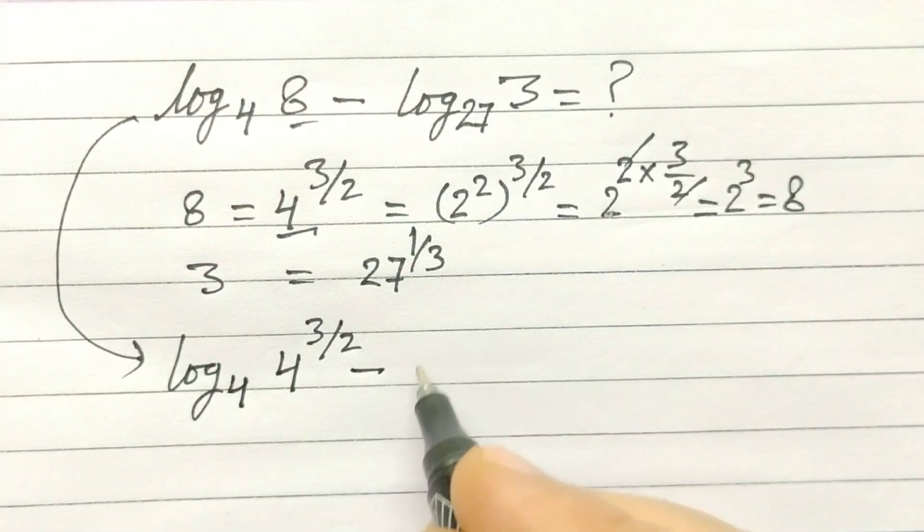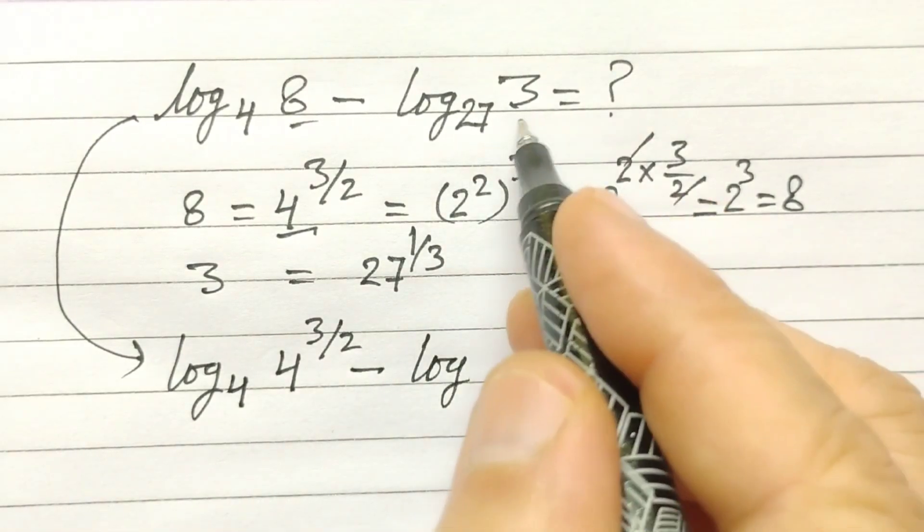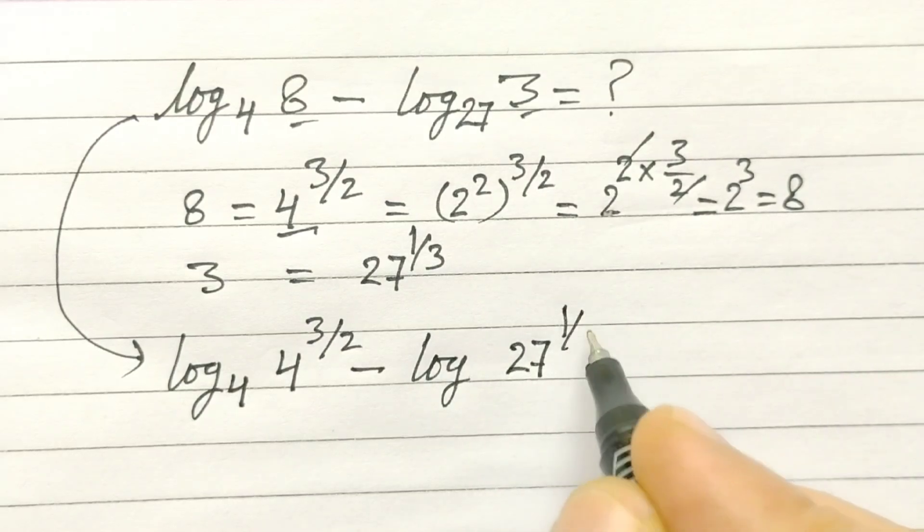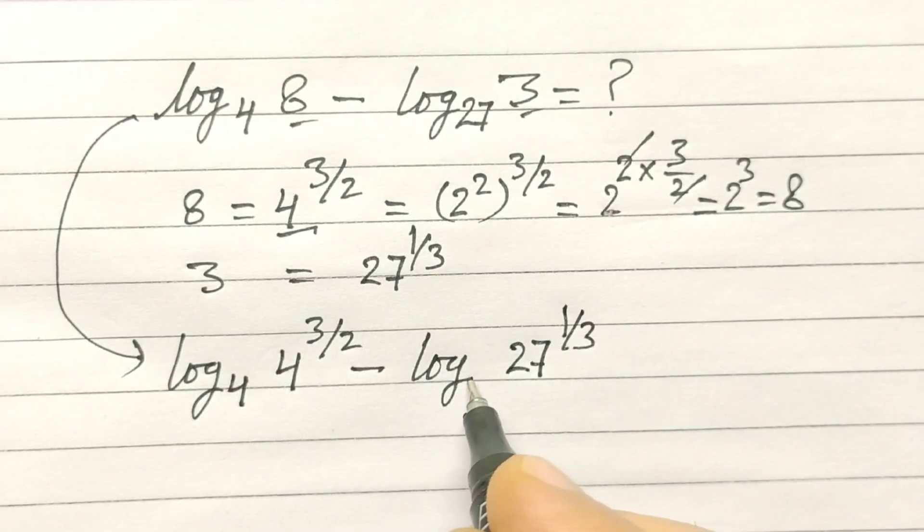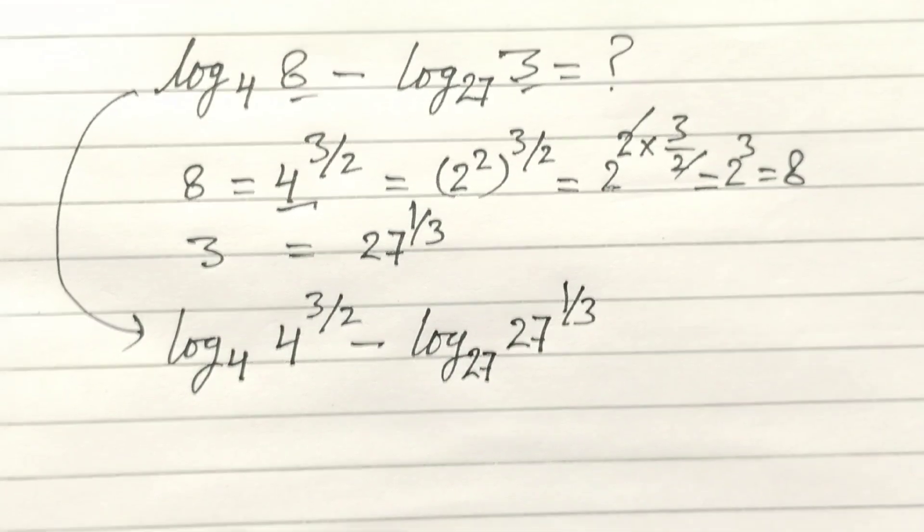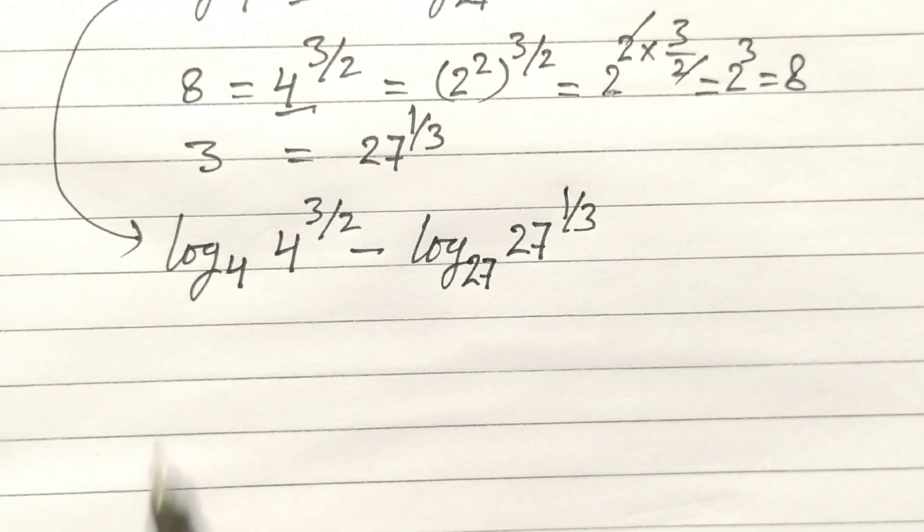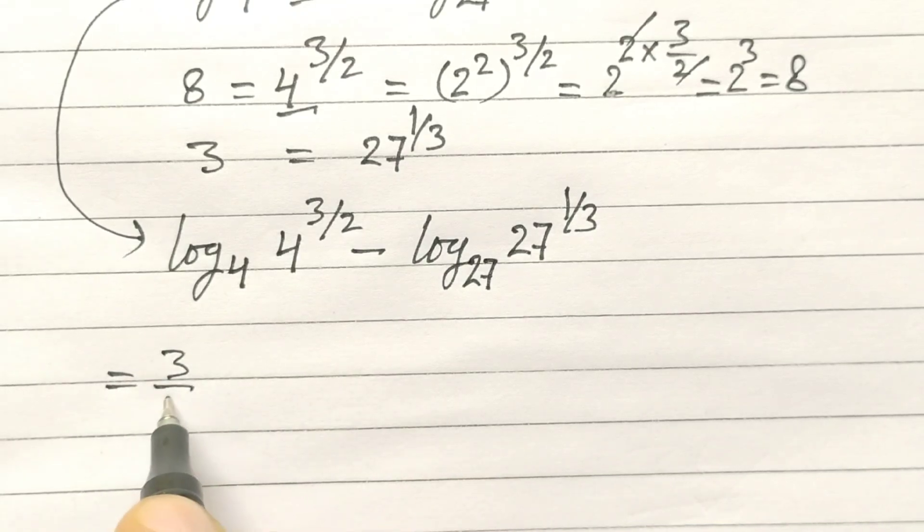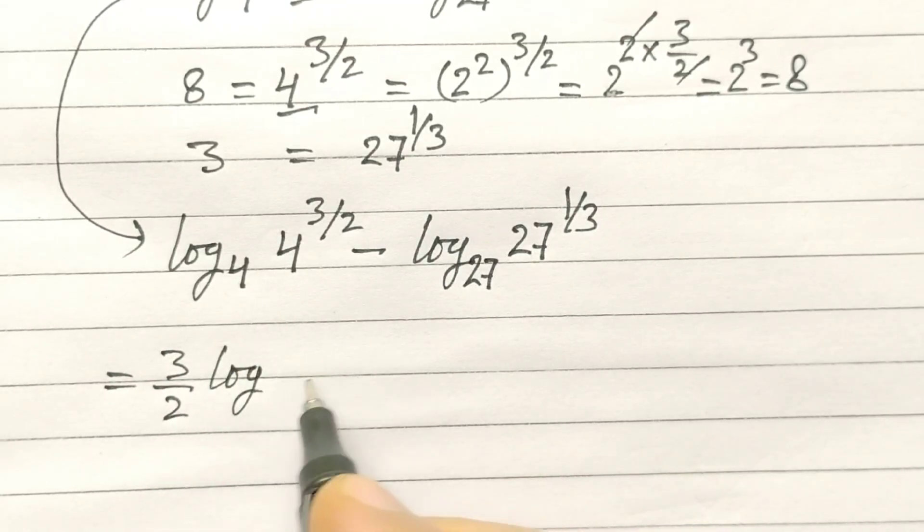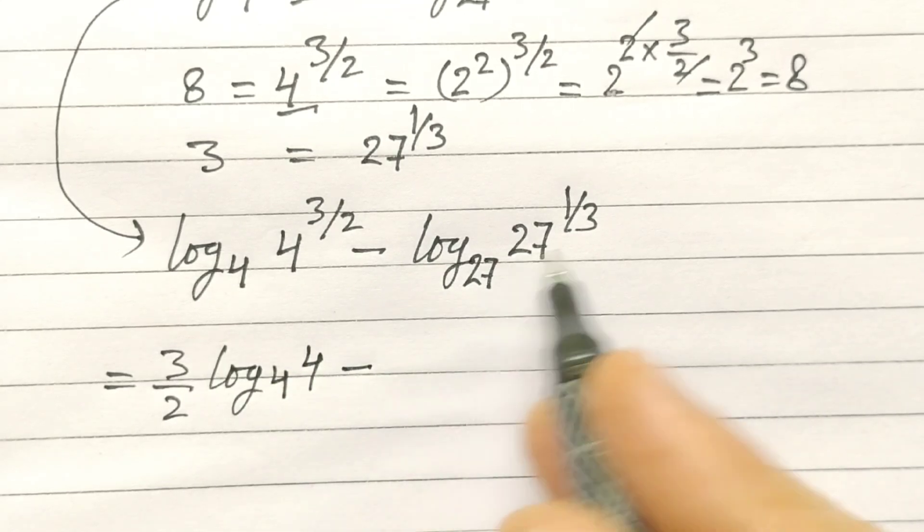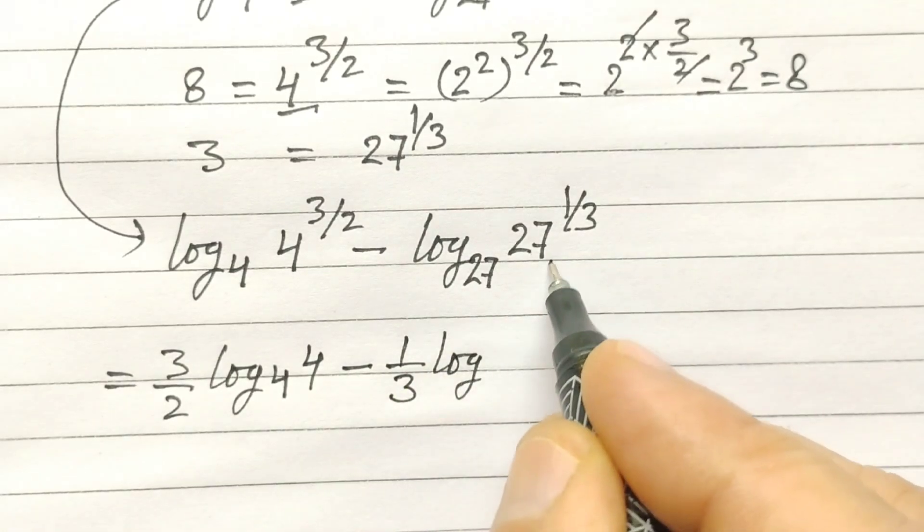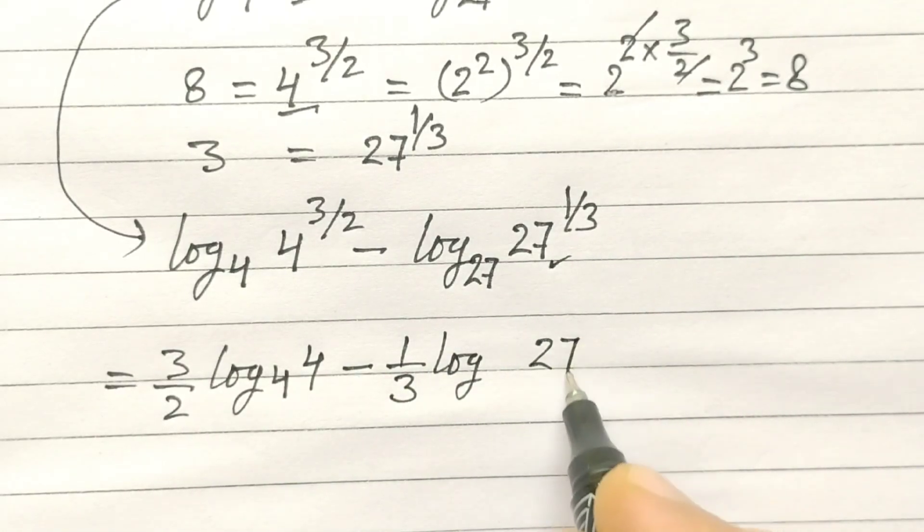Minus log of 3 as 27 to the power 1/3 to the base 27. Now, 3/2 log of 4 to the base 4 minus 1/3 log of 27 to the base 27.